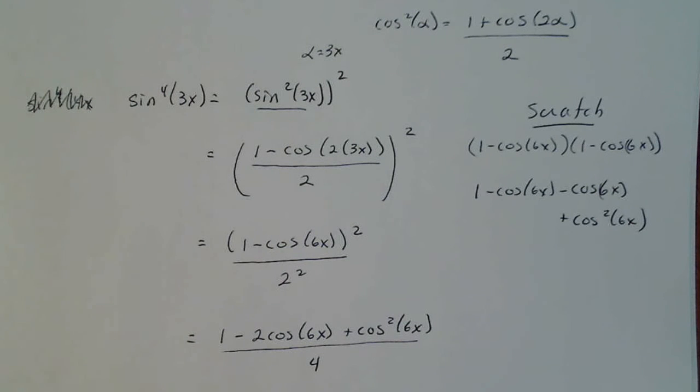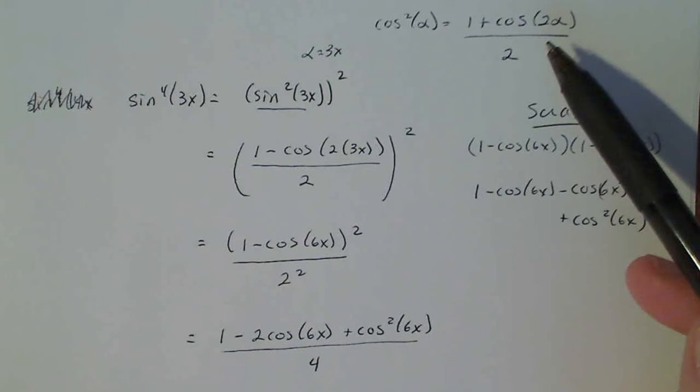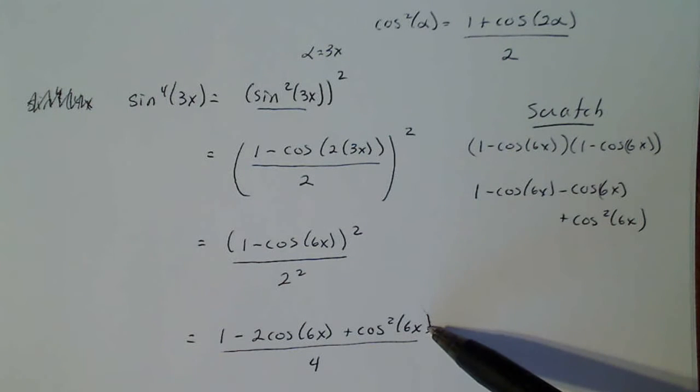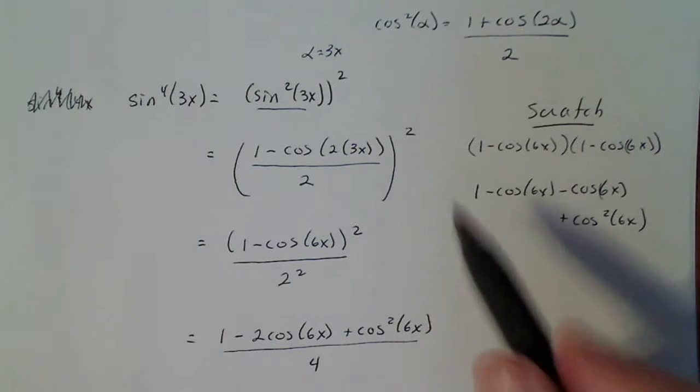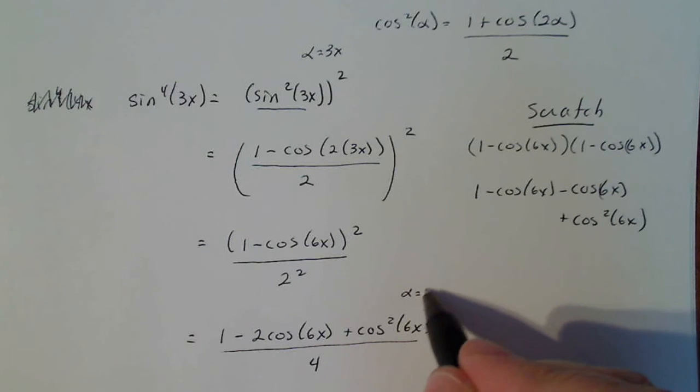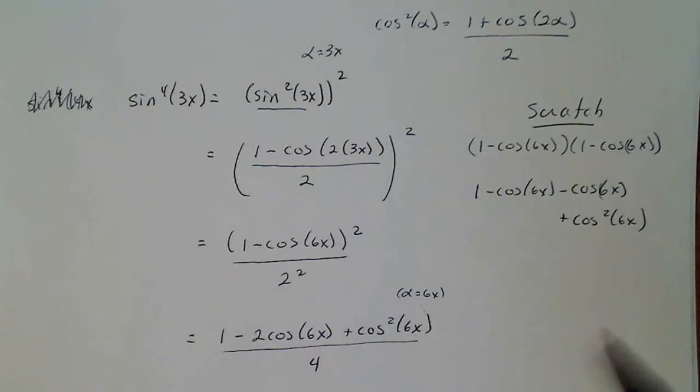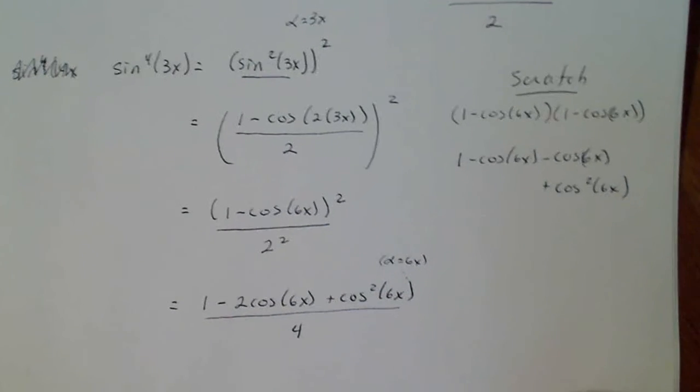Now we've reduced it from a power of 4 to a power of just 2 already. But now I'm going to utilize this identity to reduce it even further, where now alpha is equal to 6x.